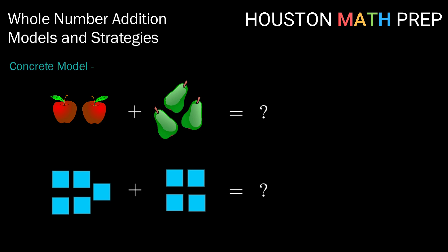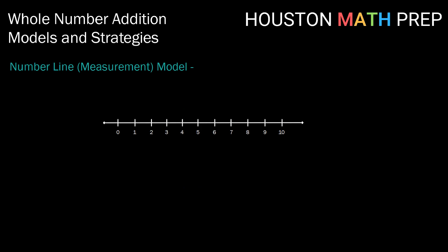Our next model is called the number line or measurement model. So this one moves away a little bit from counting objects and goes more towards adding together measurements like maybe walking three feet and then walking five more feet. So we can model values on a number line. So here for example this is how we would model four. We have a line segment with the length four. At the end of that we can add an additional line segment. In this case two.